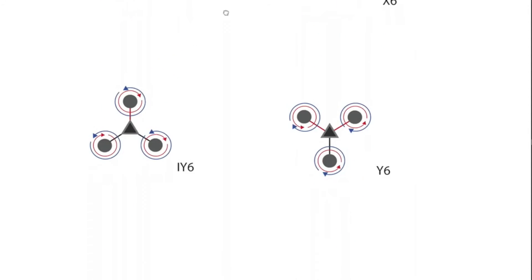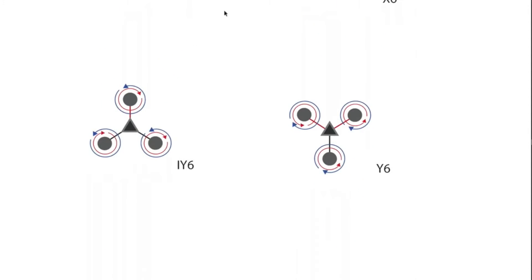A few other interesting configurations of hexcopters. The iY6 and the Y6, so you still have six motors, but you have two motors per boom spinning in opposite directions.